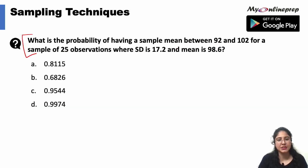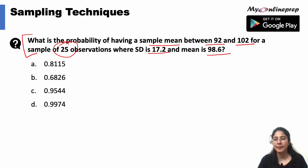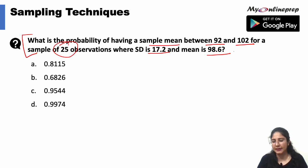The next question: what is the probability of having a sample mean between 92 and 102 for a sample of 25 observations, where standard deviation is given as 17.2 and mean is 98.6? Just keep in mind that all numerical questions are heavily weighted in statistics.